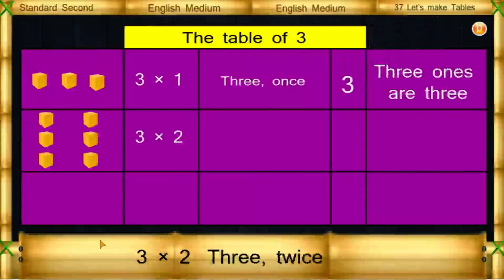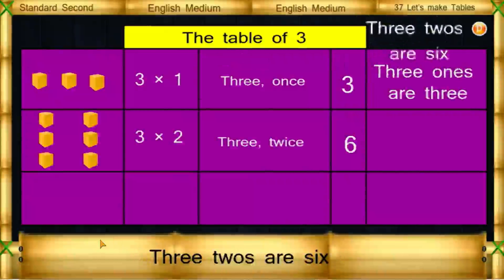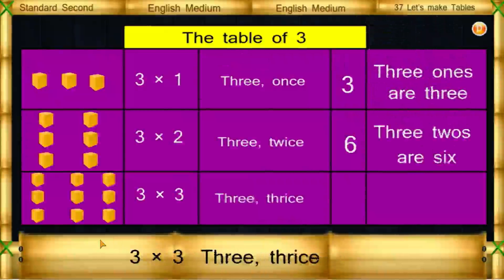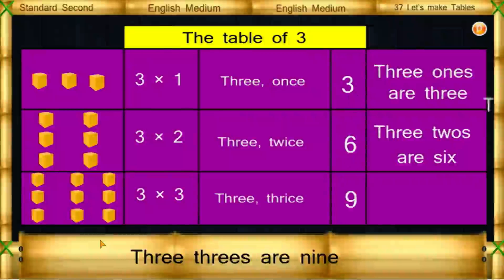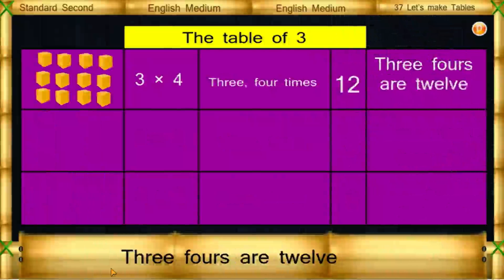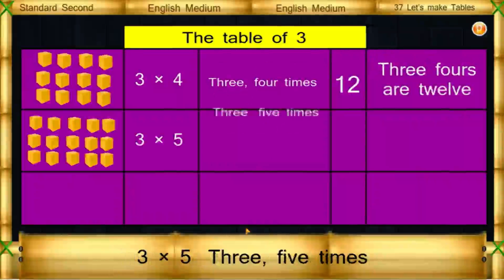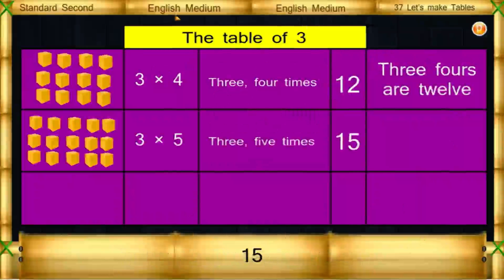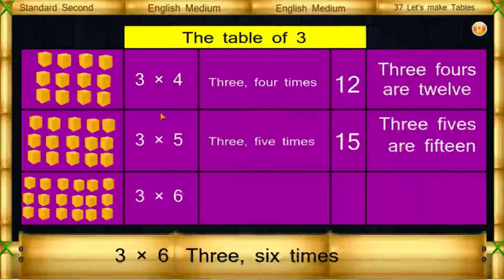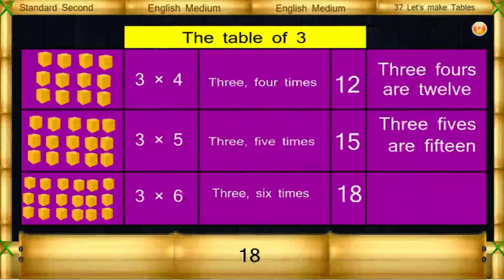3 1's are 3. 3 2's are 6. 3 3's are 9. 3 4's are 12. 3 5's are 15. 3 6's are 18.